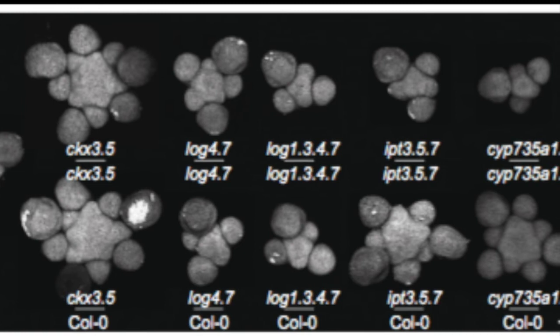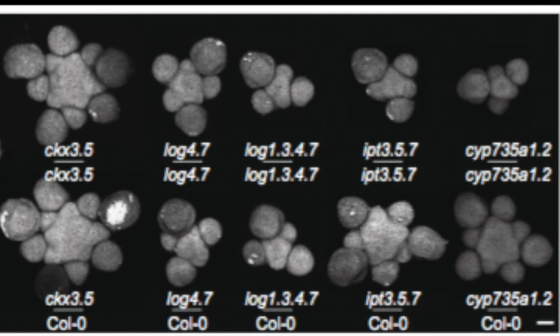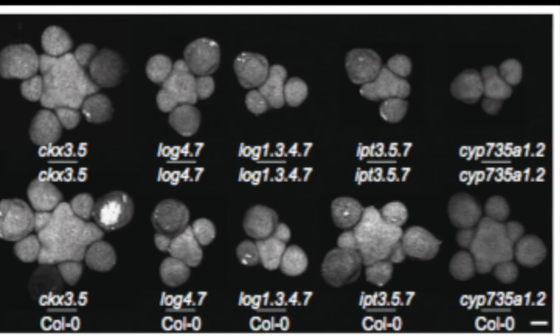But if you do that with the enzyme that produces the active cytokinin, which is a LOG enzyme for lonely guy, that effect doesn't work. So grafting a wild-type root will not be able to complement the phenotype in the meristem of lonely guy mutants, because those LOG enzymes are expressed directly there in the meristem.